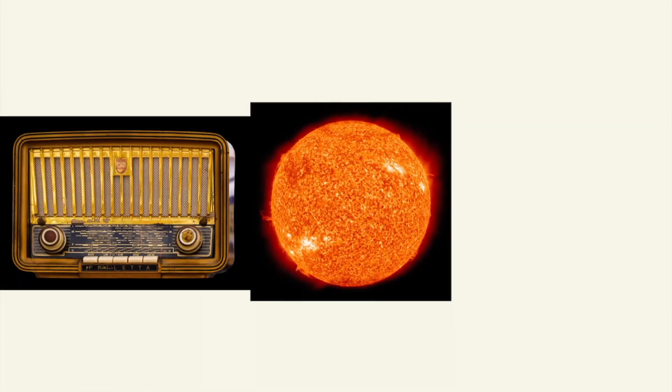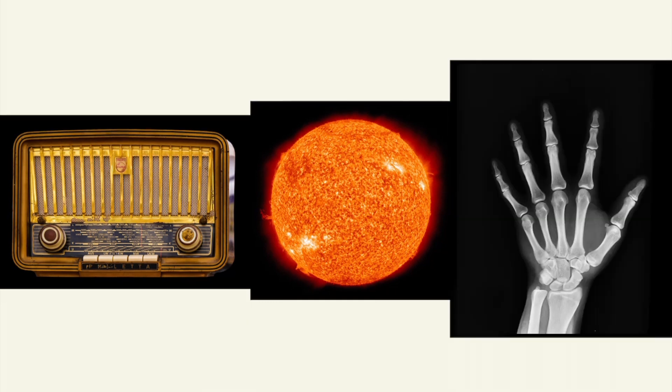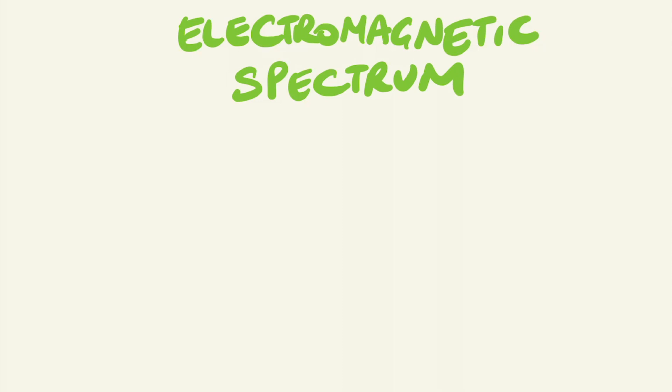Whether we encounter it as radio waves from our radio, the cosmic radiation from the sun, to the x-ray radiation when you go get medical imaging. All these types of radiation form what is called the electromagnetic spectrum.